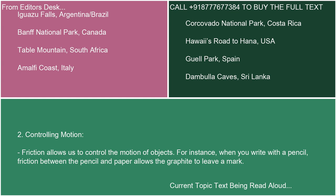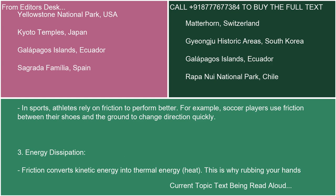Controlling Motion: friction allows us to control the motion of objects. For instance, when you write with a pencil, friction between the pencil and paper allows the graphite to leave a mark. In sports, athletes rely on friction to perform better — for example, soccer players use friction between their shoes and the ground to change direction quickly.